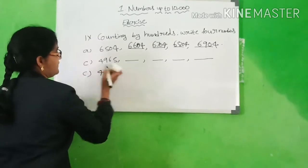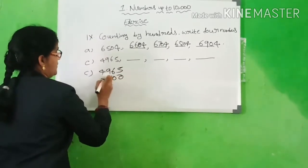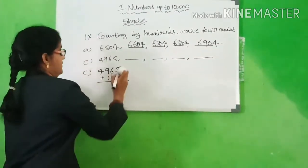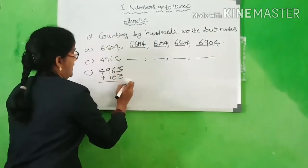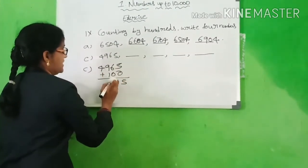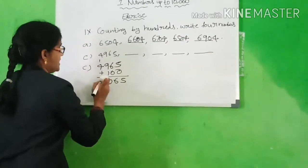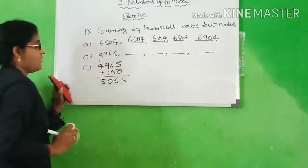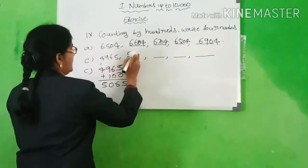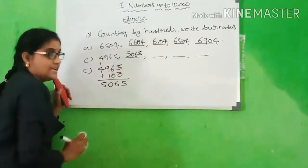4,965. You have to count — add 100. 5 plus 0 is 5, 6 plus 0 is 6, 9 plus 1 is 10, carry 1. What is the answer? 5,065. You have to write here: 5,065.